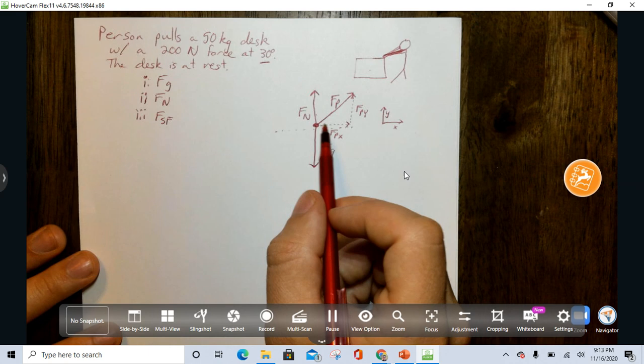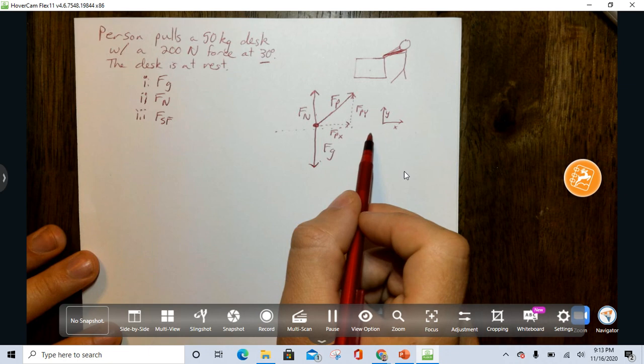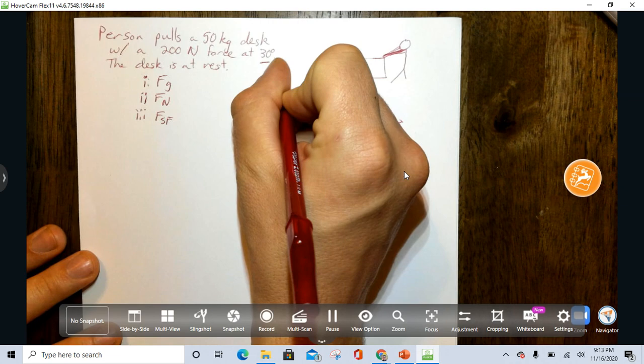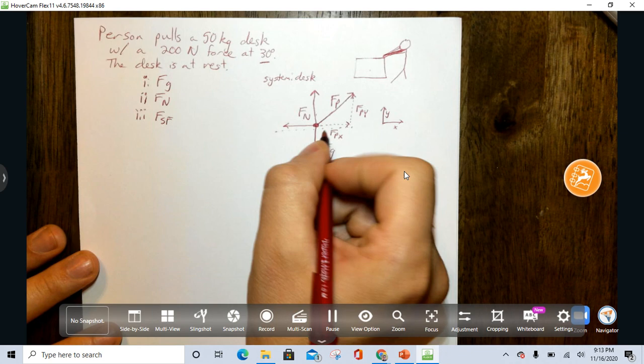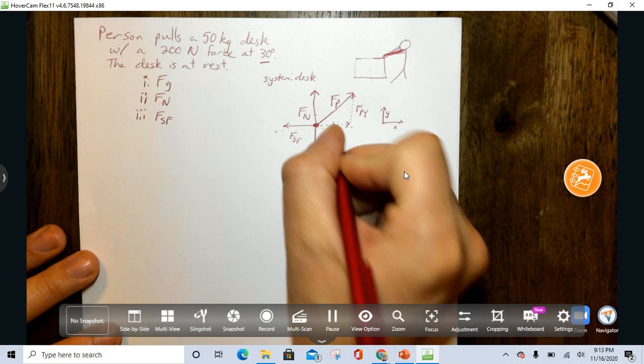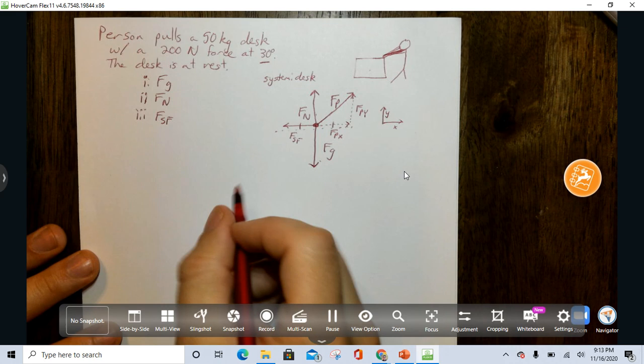Note that if we just had FPX, and this was the only force in the X direction, this desk would be moving, so we need to have the other force. The other force holding it here must be friction. These two forces should be equivalent since they're the only ones that we know about.